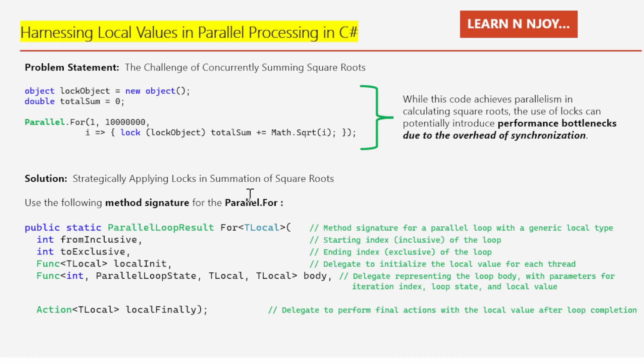Parallel.For and Parallel.ForEach offer a plethora of options for optimizing parallel processing tasks. One such optimization is the use of TLocal — a generic type argument that allows for efficient collation of data within iteration-intensive loops.